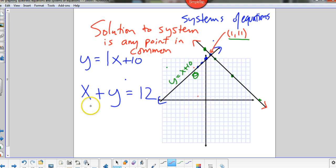1 for x and 11 for y, 1 for x, 11 for y, works for both. It's the only point that is a part of both equations. Any other solution to this equation will not work up here. Any other solution to this equation won't work down here. So 1, 11 would be the solution to the system. It's the point that they have in common.